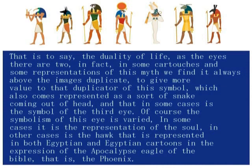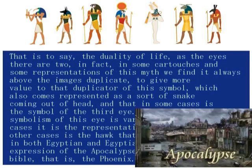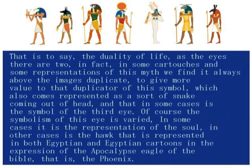つまり、生命の人間論、目がちょうど二つあるように、カルトゥーシュ、古代エジプトの花枠の装飾の中などに表現されています。また、神話の中でも、こうしたシンボルが表現されています。例えば、頭から外に出ている蛇、あるいは第三の目の表現などにおいてです。もちろん、目のシンボルは聖書の中に出てくるヨハネの黙示録の表現に見られるように、エジプト語、あるいは絵の中でも表現されています。